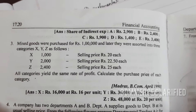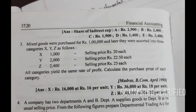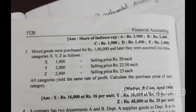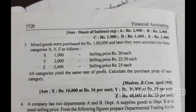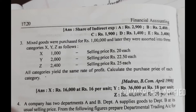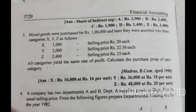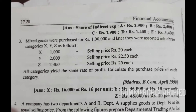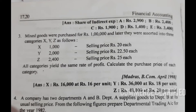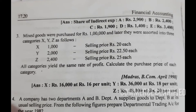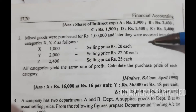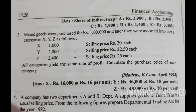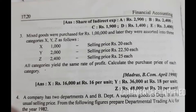This is the 5-mark problem. Mixed goods were purchased for 1 lakh, and later they were sorted into 3 categories: X, Y, and Z as follows. All categories yield the same rate of profit. Calculate the purchase price of each category.